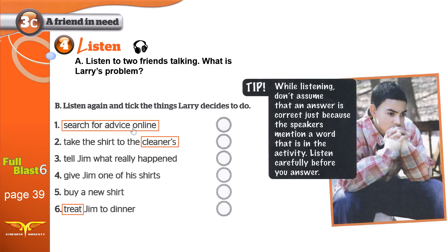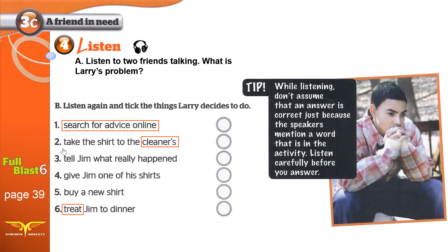1. Search for advice online — look for help using the internet, search the internet for help. 2. Take the shirt to the cleaners. A cleaners is a place where you can get your dirty clothes cleaned. You take your clothes to the cleaners, pay money, and they clean your clothes for you. 3. Tell Jim what really happened — just go to Jim and tell him the truth. Will he do that? We'll see.